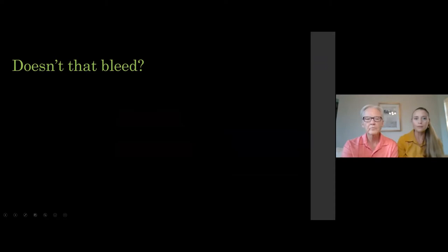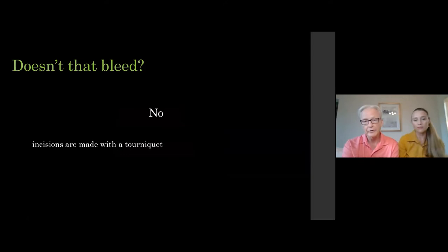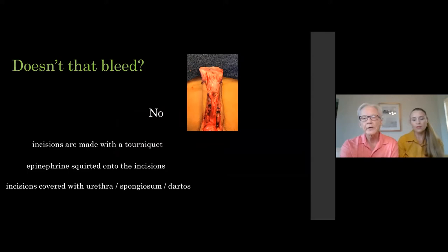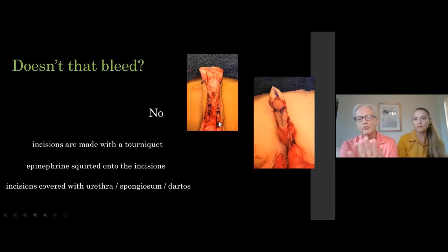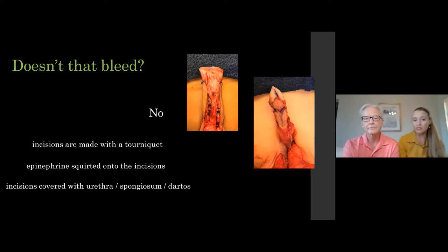People always ask if it will bleed a lot, but it doesn't. We do those incisions with a tourniquet on, then squirt full-strength topical epinephrine and hold some pressure. We then bring the urethra back out — we dissected the urethra and urethral plate out of the way. After the three incisions, we sew the urethral meatus distal to the most distal incision. We take the dartos tissues and spongiosum along the urethra and stitch those around that perimeter with PDS suture to wall it off and quilt it down for hemostasis.